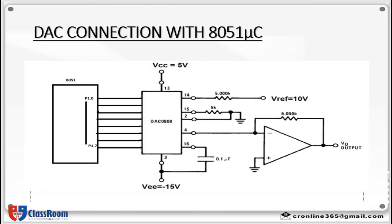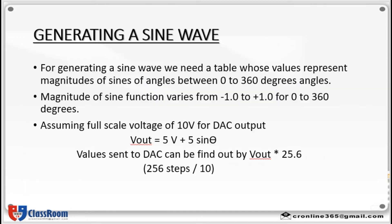Then using DAC we can generate a sine wave. For generating a sine wave we need a table whose values represent magnitudes of sine wave between 0 to 360 degree angles. That means with 30 degree increment you have to create a sine wave. Magnitude of sine function varies from minus 1 to plus 1 for 0 to 360 degrees.